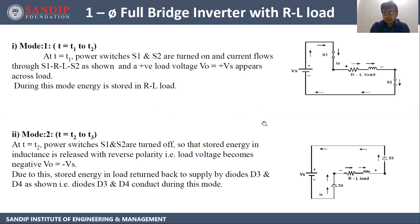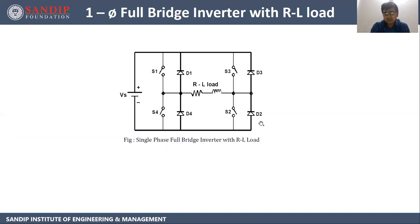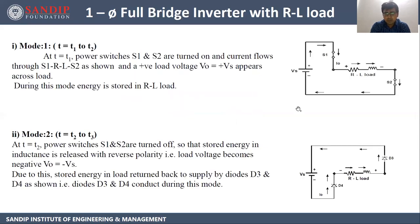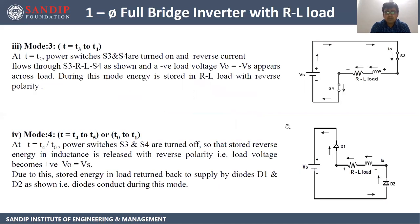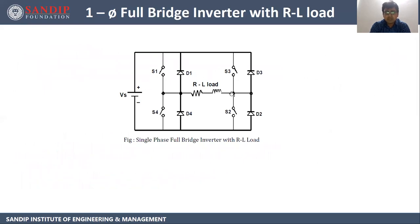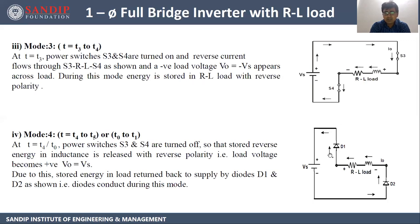In Mode 2, the energy stored by the inductor in Mode 1 is dissipated through diodes D3 and D4 — from the load → D3 → Vs → D4. In Mode 3, switches S3 and S4 are closed; current flows from Vs positive → S3 → RL → S4 → Vs negative, giving output across the inductive load and the inductor stores energy again. In Mode 4, the energy stored in Mode 3 is dissipated through diodes D1 and D2 — from D1 → Vs → D2 → RL load.